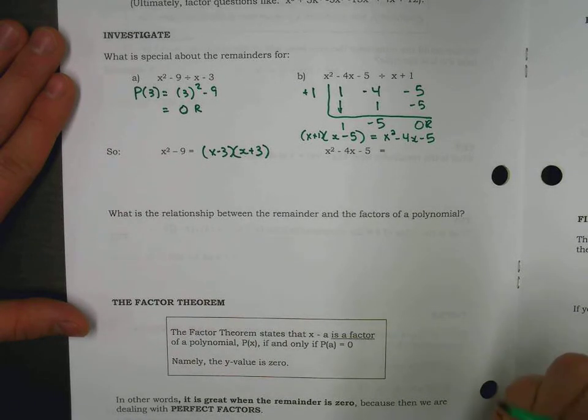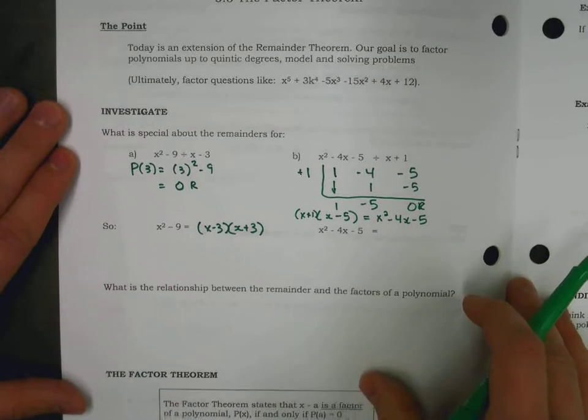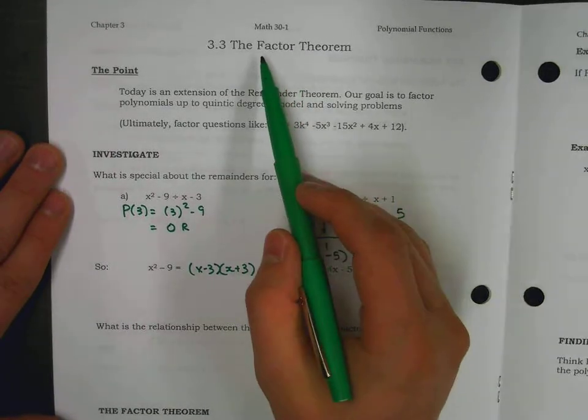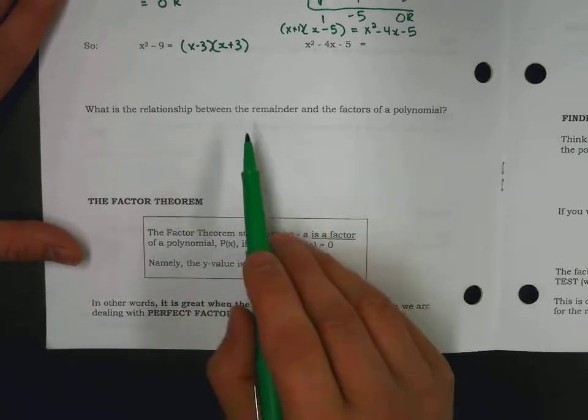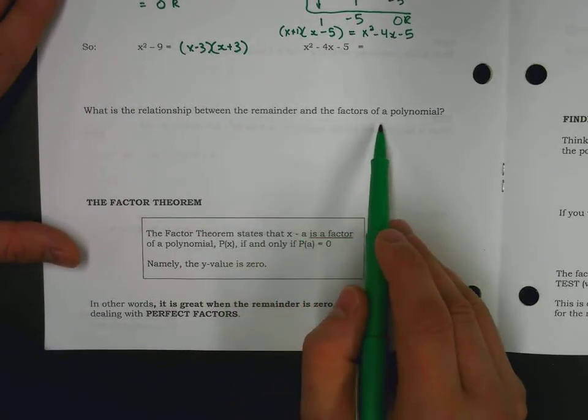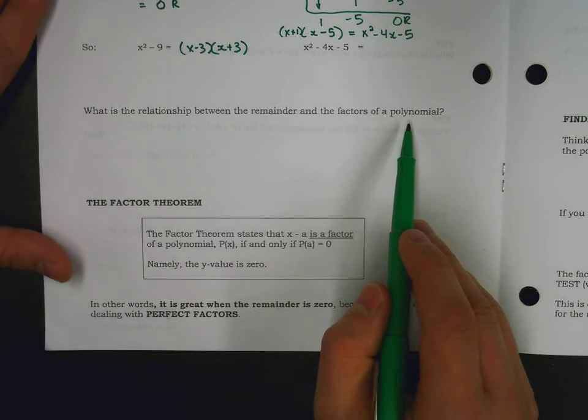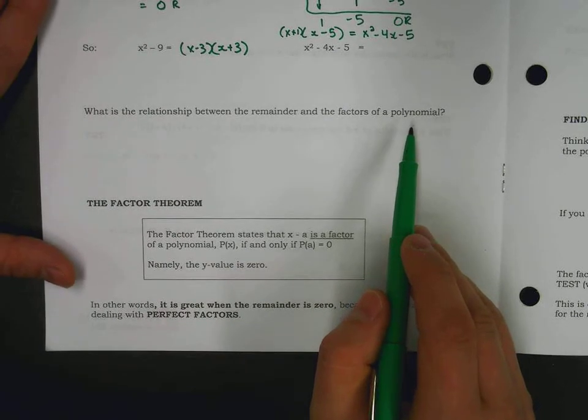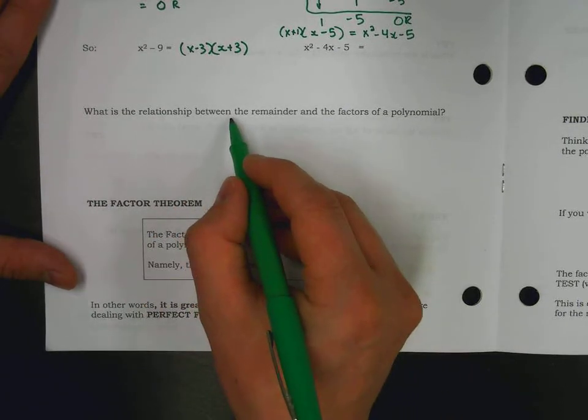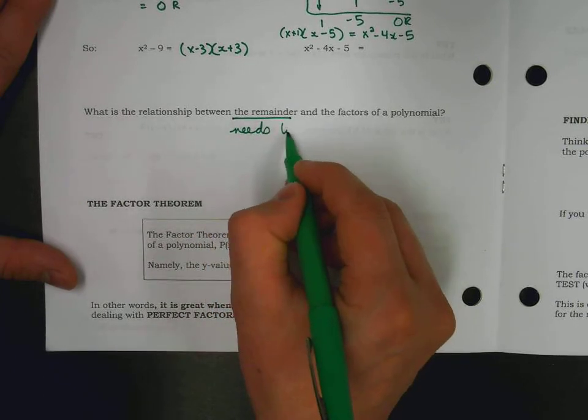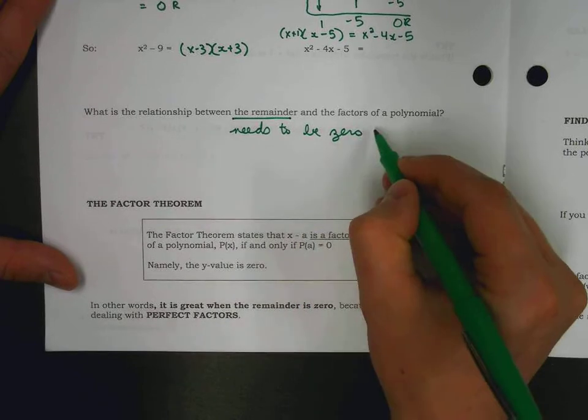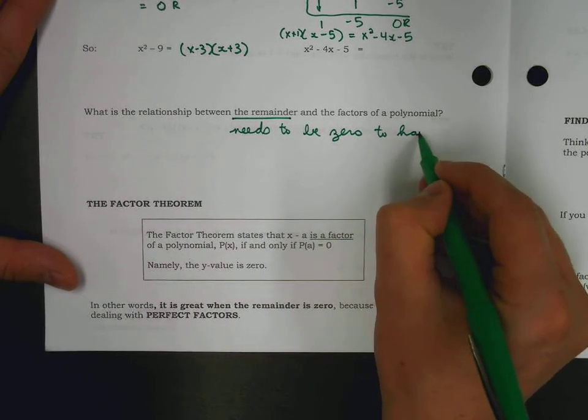So today we're going to talk about the special case where there isn't a remainder, and where we're looking for factors. There is a relationship between the remainder and the factors of a polynomial, and I'm going to mention this a few times today, that the remainder needs to be zero to have perfect factors.